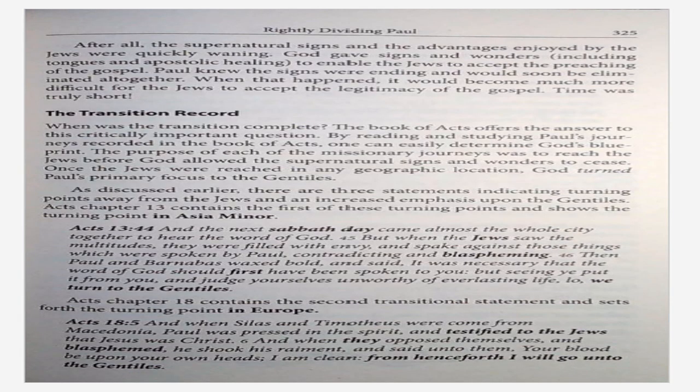After all, the supernatural signs and advantages enjoyed by the Jews were quickly waning. God gave signs and wonders, including tongues and apostolic healing, to enable the Jews to accept the preaching of the gospel. Paul knew the signs were ending and would soon be eliminated altogether. When that happened, it would become much more difficult for the Jews to accept the legitimacy of the gospel. Time was truly short.